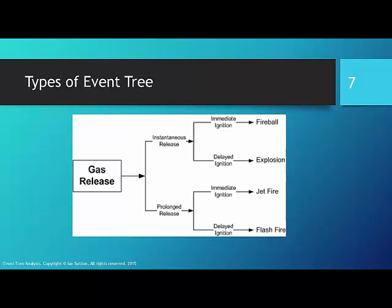This sketch shows how an event tree can differentiate between instantaneous and prolonged releases of flammable hydrocarbons. An instantaneous release can lead to a fireball or explosion. A more prolonged release can lead to a jet fire or a flash fire.